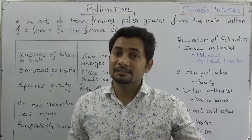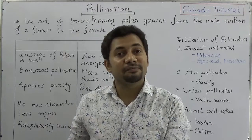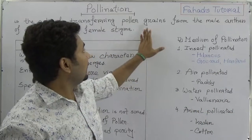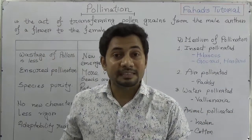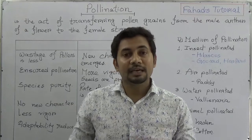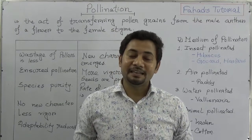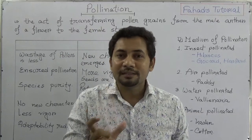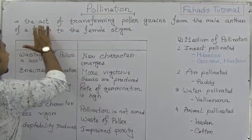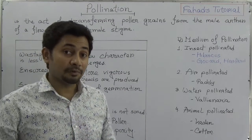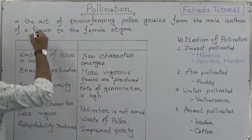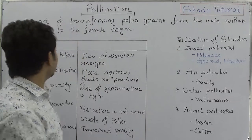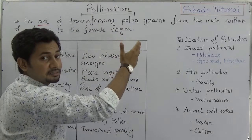I hope you know what is Androsium and what is Gynesium, what are the parts of Androsium and what are the parts of Gynesium. In the anther, which is the part of the stamen, pollen grains are produced. Stigma is the apical part of the carpel. Pollination is an act of transferring pollen grains.